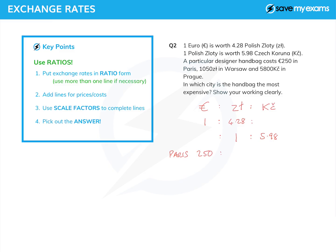In Paris it's 250 euros. What is that in zloty? We need to multiply one by 250 to get 250, and so we need to multiply the 4.28 by 250 as well, and that gives me 1070. We can see very quickly that it is more expensive in Paris, as it only costs 1050 zloty in Warsaw but the Paris price is 1070 zloty. So Paris is more expensive than Warsaw, and we can essentially ignore Warsaw in the rest of our calculations.